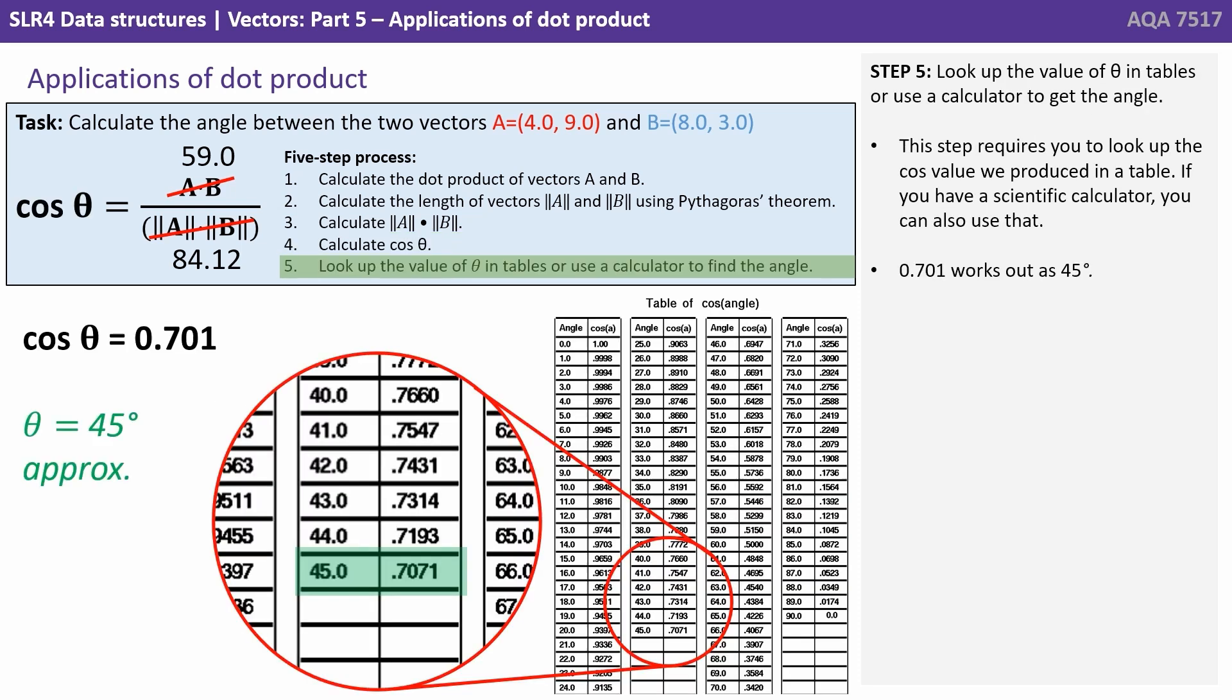Finally step five we can look up the value of cos θ in tables or use a scientific calculator to get the angle. This step as we said requires you to look it up. So 0.701 works out at approximately 45 degrees.